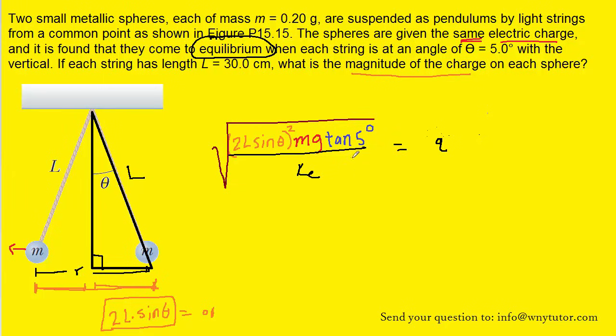Now, everything on the left side is known. The mass was given. It was given in grams, though, so when we plug that in, make sure you change that to kilograms by multiplying by 10 to the minus 3. G is a constant. It's 9.8, of course. Theta, the angle, was given as 5 degrees.